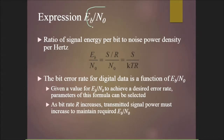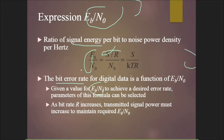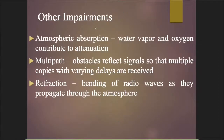The ratio Eb/N₀ is the ratio of signal energy per bit to noise power density per hertz, also related to signal-to-noise ratio: Eb/N₀ = (S/r) / N₀ = S/(kTr). The bit error rate for digital data is a function of Eb/N₀. Given a desired error rate, system parameters can be selected accordingly. As bit rate r increases, transmitted signal power must increase to maintain the required Eb/N₀.